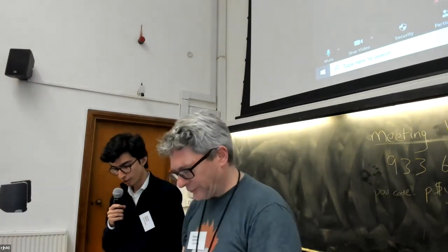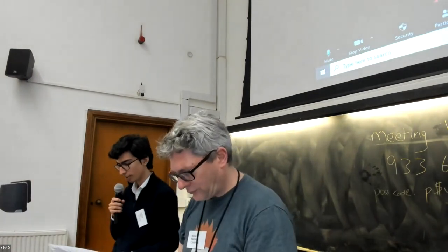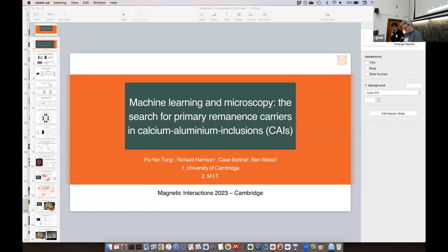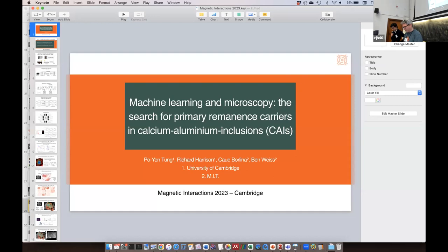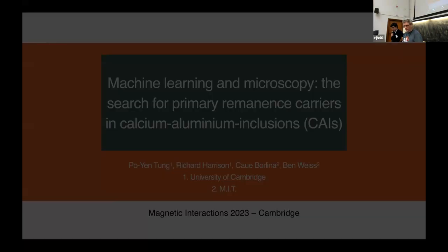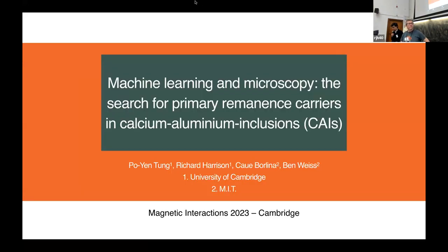Our third talk is by Bert Harrison, presenting on machine learning and microscopy: the search for primary remanence barriers in carbonaceous chondrite meteorites.